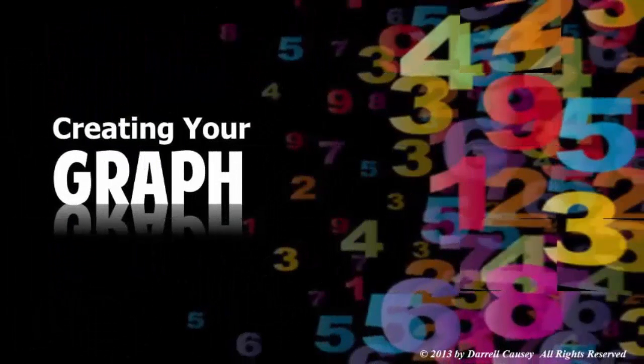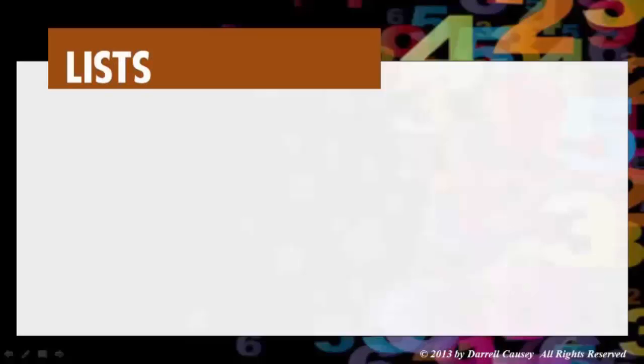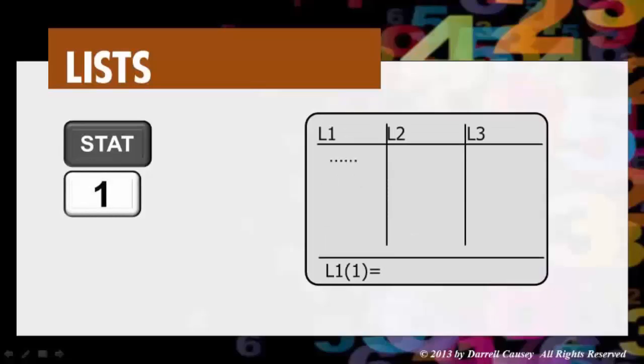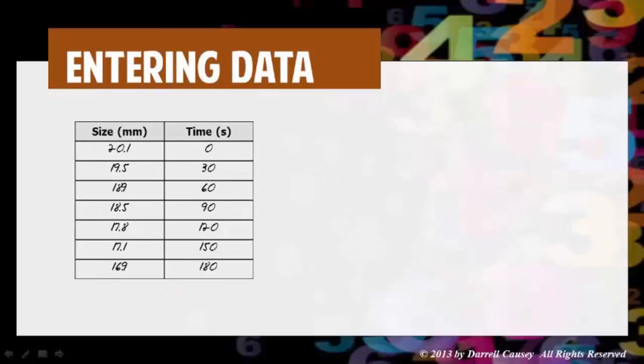So now let's create our graph with that data. Hit stat and go to 1 which is edit. Let's put our numbers in for our list. You need to know that L sub 1 is x, independent, and L sub 2 is our dependent. Here's your data. Now remember time is going to be the independence, that's L sub 1, and size is L sub 2.